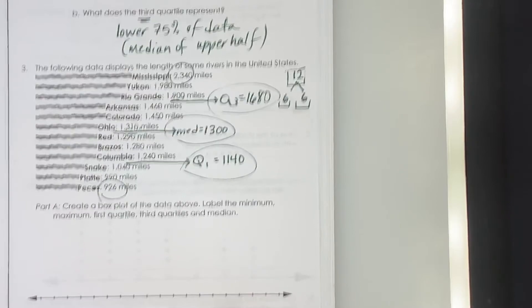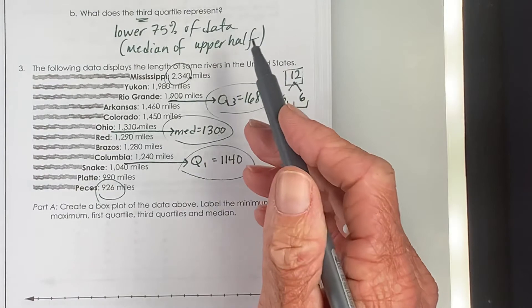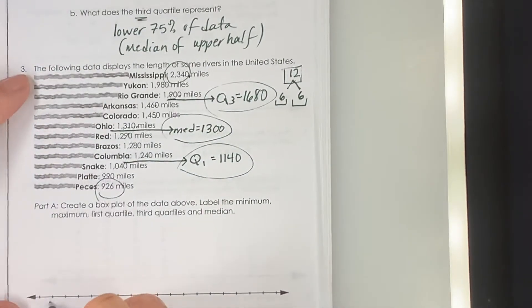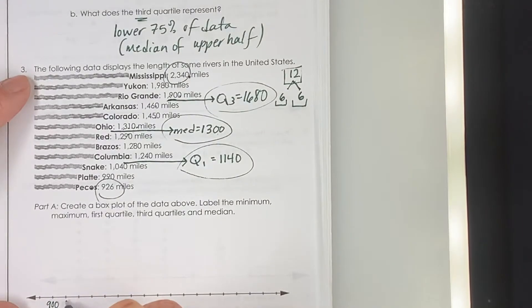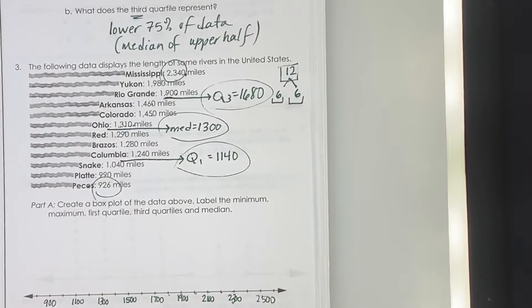So we're going from roughly 900 up to about 2,300. I can probably count by hundreds to make that happen. So 900, 1,000, 1,100, 1,200, 1,300. So I'm counting by hundreds. I'm just only writing every other one. 1,700, 1,800, 1,900, 2,000, 2,100, 2,200, 2,300, 2,400, 2,500. That works.